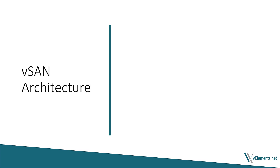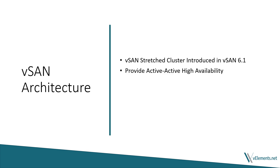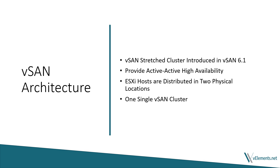vSAN stretch cluster was introduced in vSAN 6.1 and it brings high availability in an active-active fashion. In this architecture, ESXi hosts would be placed in two different physical locations and joined together with a high bandwidth, low latency network. But from a management perspective, despite hosts being in two different sites, they belong to one single vSAN cluster and share their resources. This solution can be used in environments where disaster avoidance is a critical matter, because it gives you the ability to avoid or recover from a disaster by having two different physical sites that host your applications.